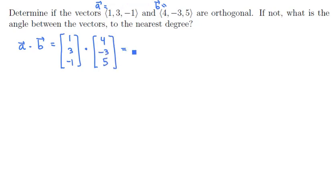So now we can compute their dot product, the sum of the pairwise products of their components. Multiplying across the first pair of components, we get 4. Multiplying across the second pair, we get negative 9. And across the third pair, we get negative 5. And now we add these together.